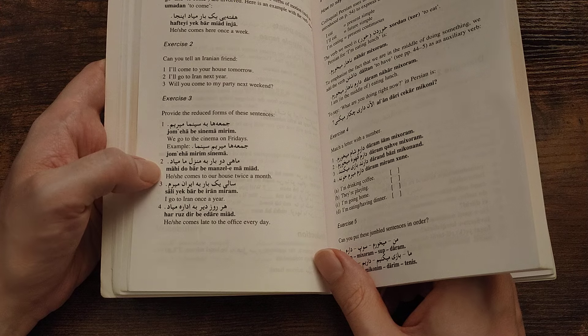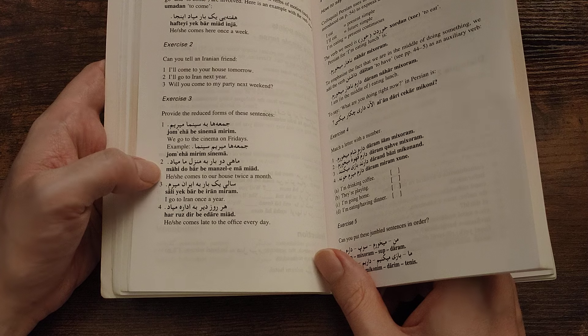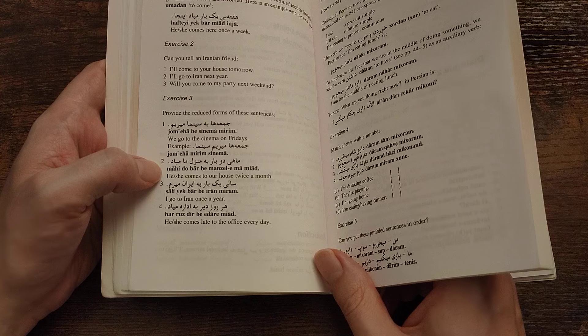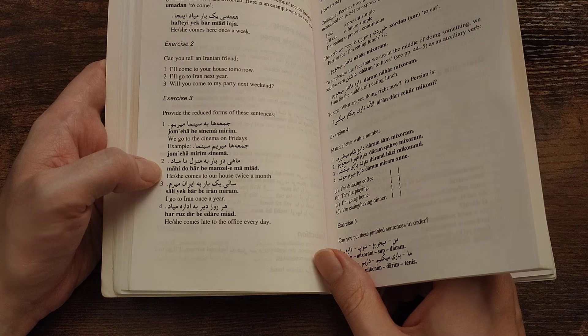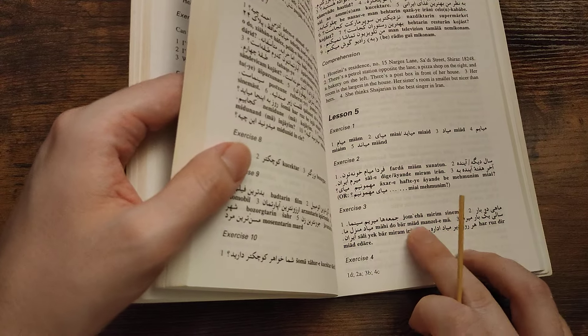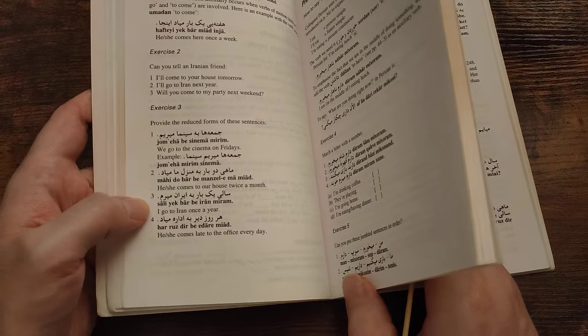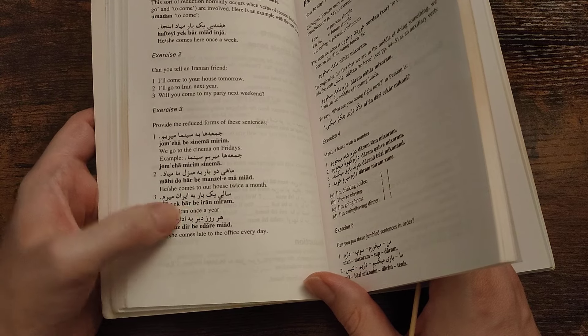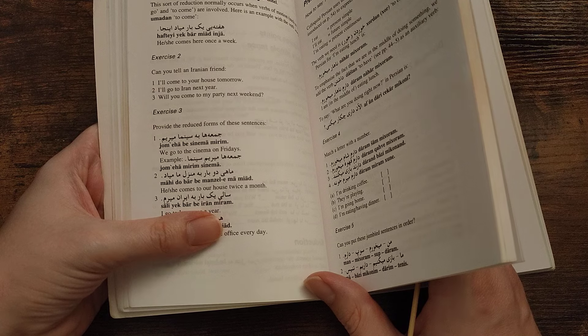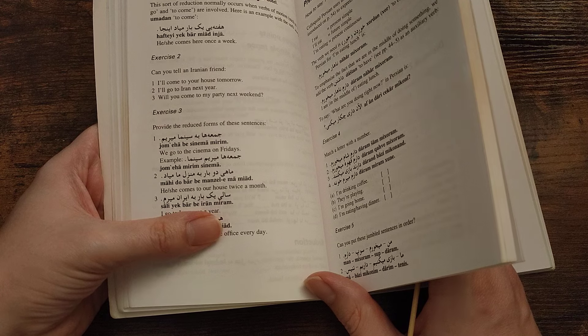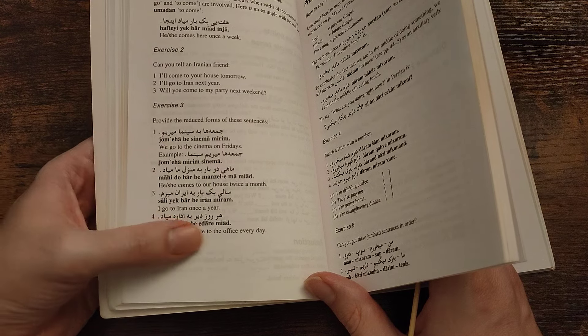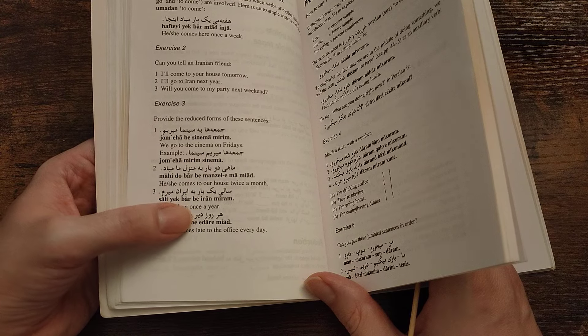She comes to house, manzel, home. Yeah, twice a month. Mah is month. Okay, yeah, makes sense. The fact that Persian is a European language makes it so much easier. It just makes sense when you say a word. Mah, like most European languages, the word for month begins with M. Mahi dobar miyad manzelima. Saali yekbar be Iran miram. So without looking at the English: saali yekbar, one time, be Iran miram. I go to Iran once a year. Yeah. Saali yekbar miramiran.